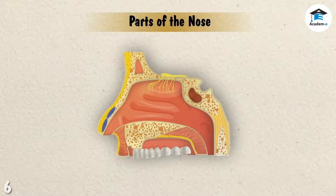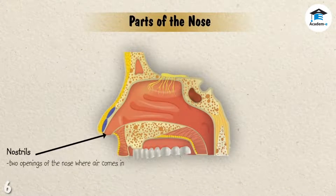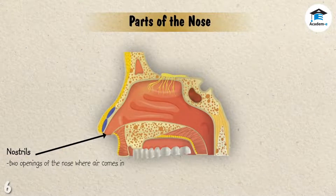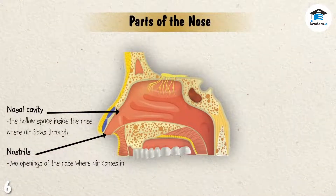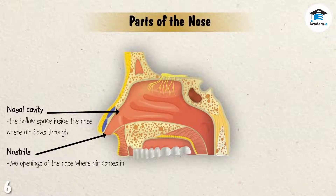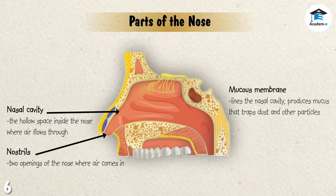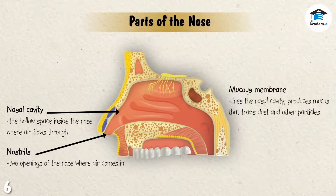The nostrils are the two openings of the nose where air comes in. The nasal cavity is the hollow space inside the nose where air flows through to travel to the lungs. It is lined with a mucus membrane that produces mucus. The mucus, together with the hair inside the nose, traps dust and other particles to prevent them from entering the lungs.